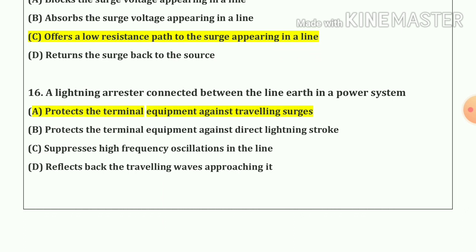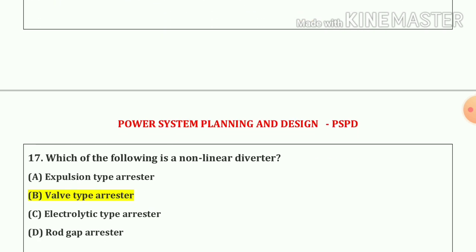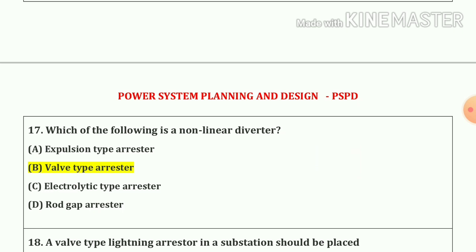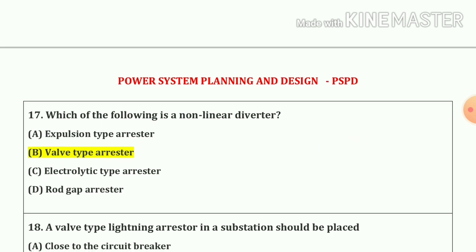Question number 16. A lightning arrester connected between the line and earth in a power system protects the terminal equipment against travelling surges. Our answer is option A. Question number 17. Which of the following is a non-linear diverter? Our answer is the valve type arrester.